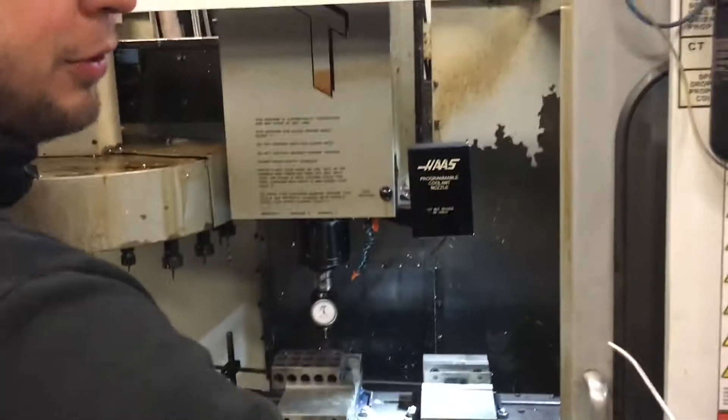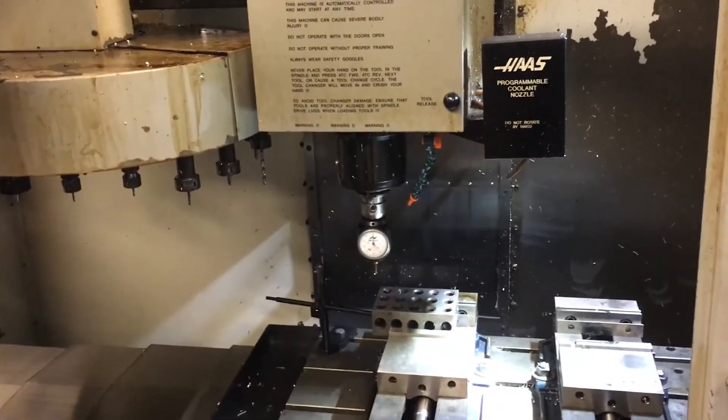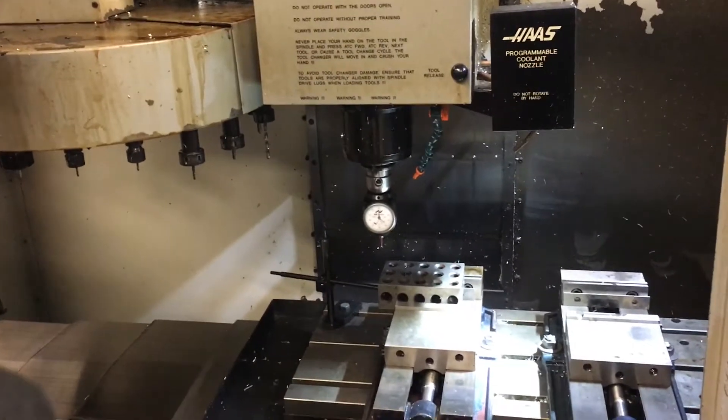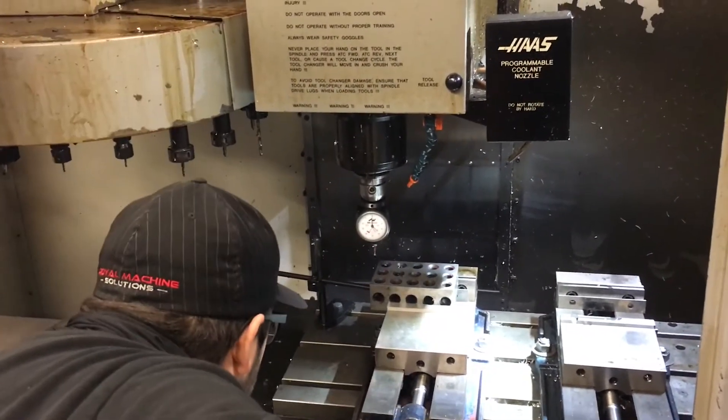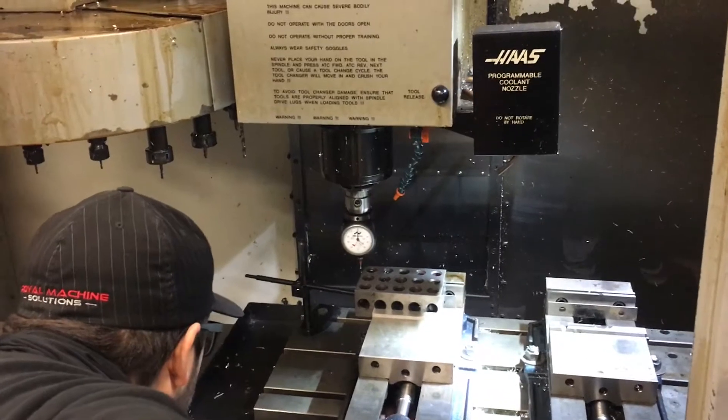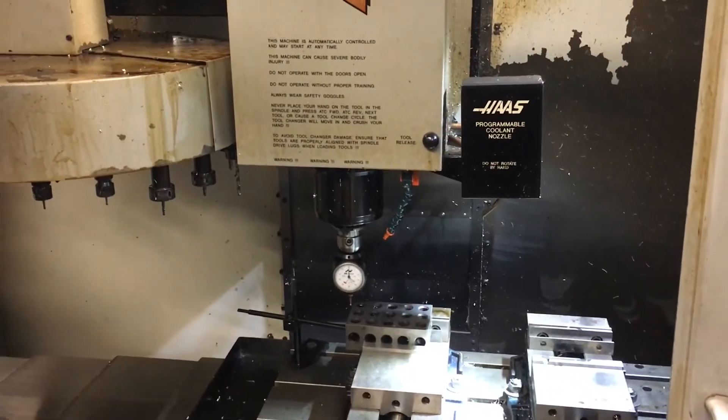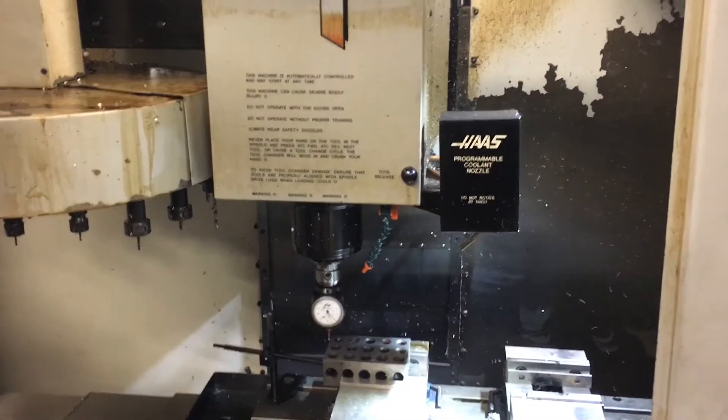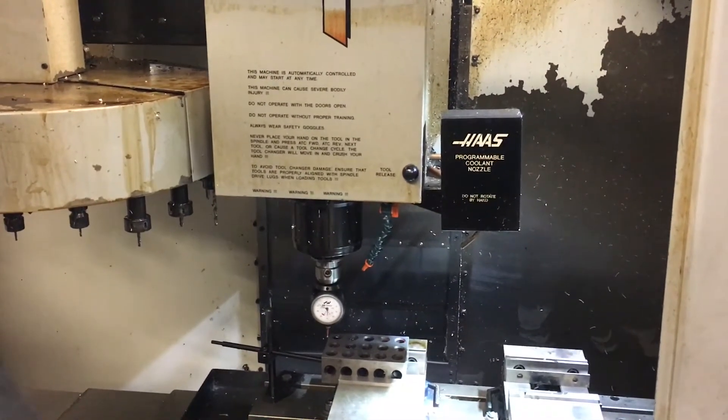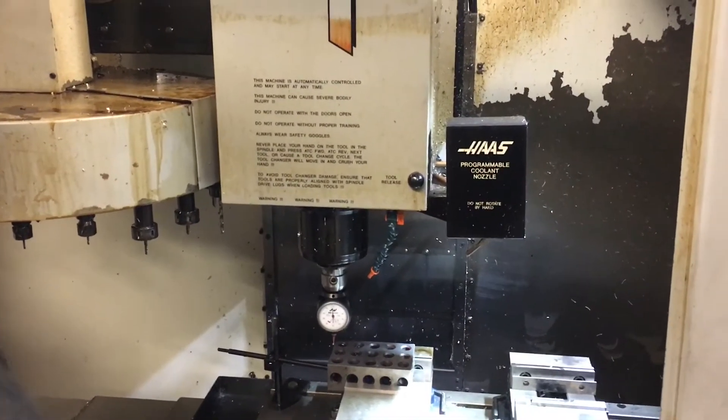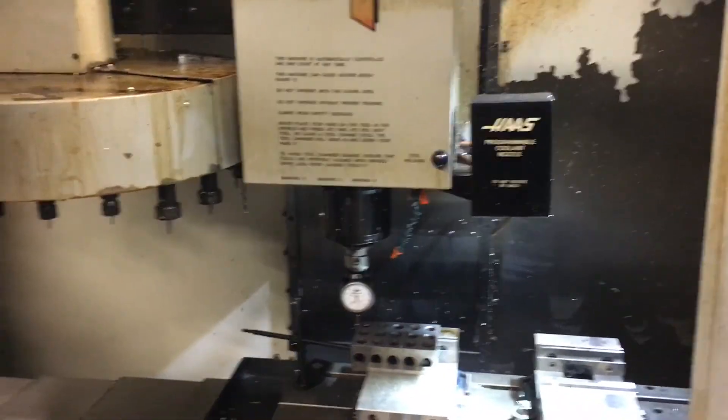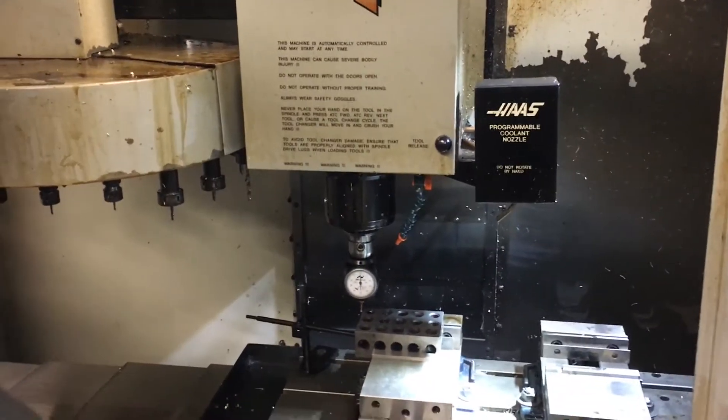In the same procedure as before, go in the handle jog, select your increment. On Z. Go down. Going to go into tenth a thou. Crank that up.